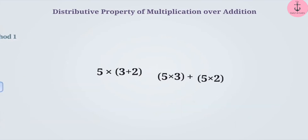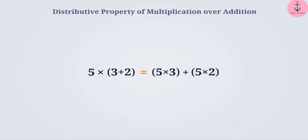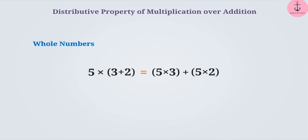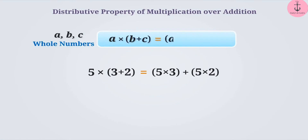What did you understand from this? Here, the multiplication is distributed over the sum of two numbers. Therefore, for any three whole numbers a, b, and c, a into (b plus c) can be distributed as a into b plus a into c. This is called the distributive property of multiplication over addition.